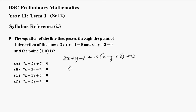That gives me 2, y goes out, minus 1 plus k into (1 plus 3) equals 0. So this becomes 1 plus 4k equals 0, which of course means that k equals minus a quarter.